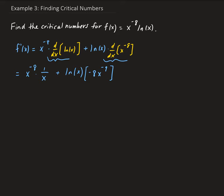From here we set this derivative equal to zero. Rewriting, we can put x to the negative eight into the denominator, giving x to the ninth, so we have one over x to the ninth minus eight times natural log x, all divided by x to the ninth, equals zero. This is equivalent to one minus eight natural log x, all over x to the ninth, equals zero.